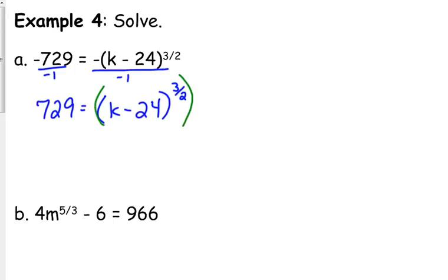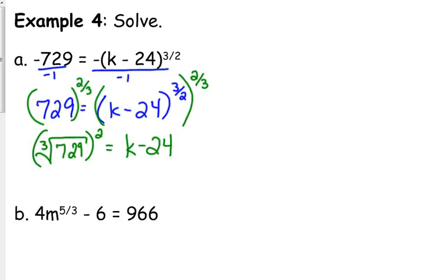So we raise that to the reciprocal power. We raise both sides to the 2 thirds. So that is the cube root of 729 squared. We're only going to have one solution because we are taking an odd root, the cube root.